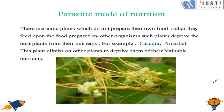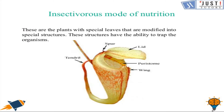Parasitic mode of nutrition: organisms that exhibit this mode are called parasites. Parasites obtain their nourishment from other living organisms. In parasitic mode, plants depend on other plants or animals for their nourishment and deprive the host plant of its nutrients. For example, Cuscuta — also called Amarbel — climbs on other plants to deprive them of their valuable nutrients.